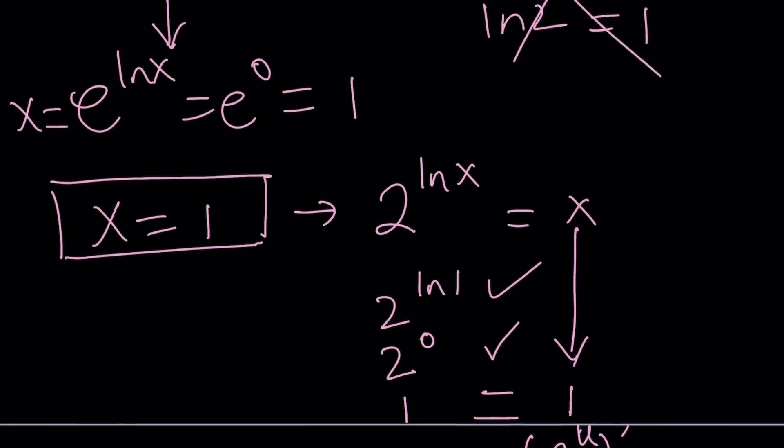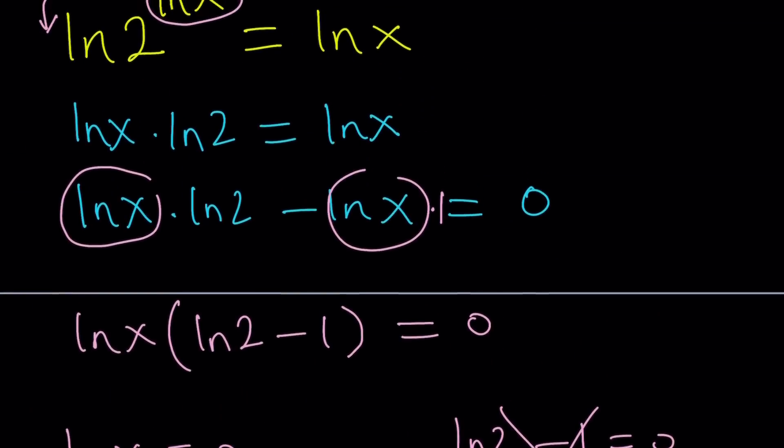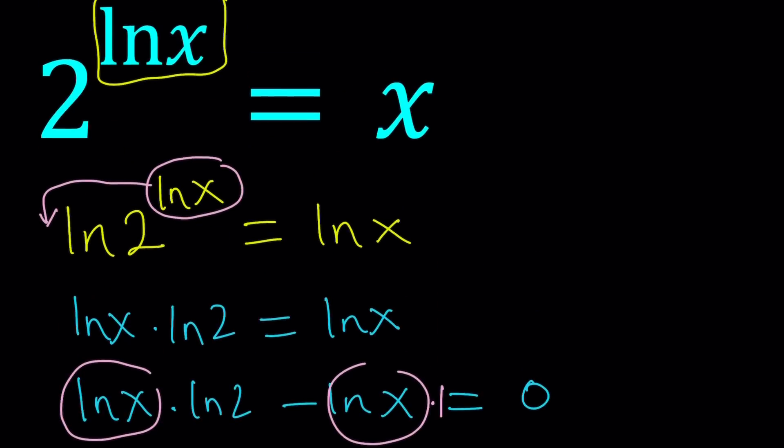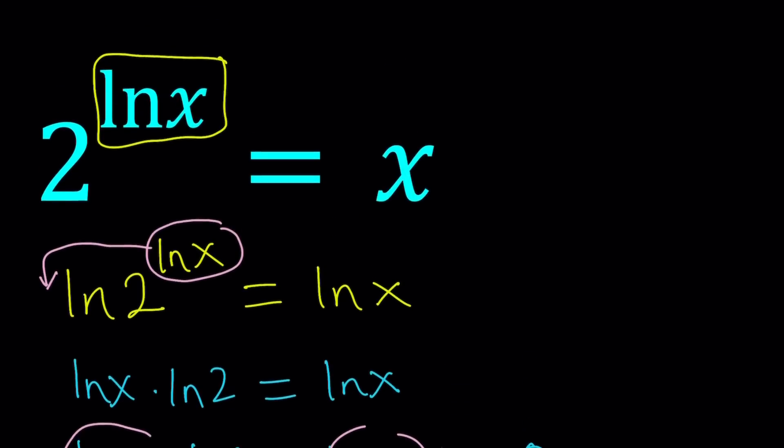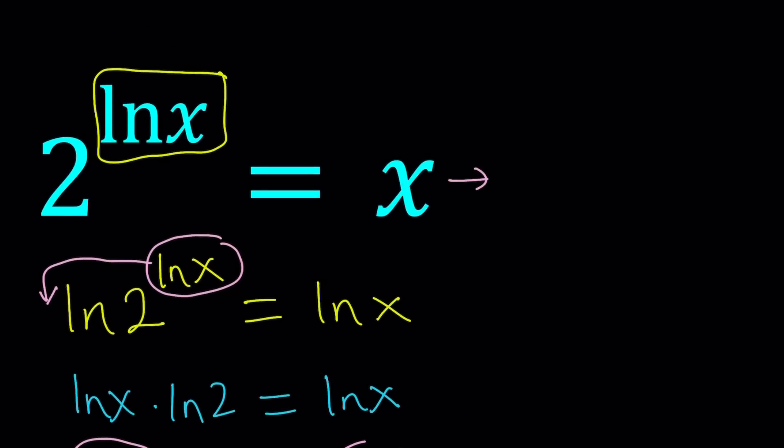So we basically log both sides. So is there another alternative? Like instead of logging both sides, can we do something else? Let's go ahead and take a look at an alternative approach. So we can also do the following. We can go ahead and use substitution. For example, suppose ln x is equal to u, then from here we get, well, the base is e here. Remember the definition? e to the power of u equals x by using the definition of logs. So we can go ahead and substitute this. We get 2 to the power of u equals x, which is e to the power of u.